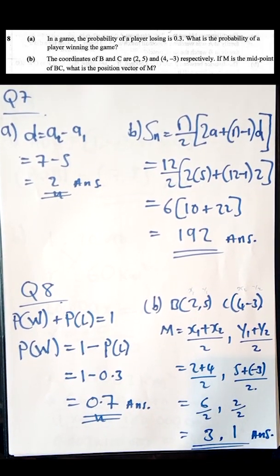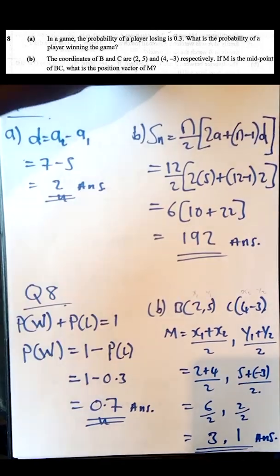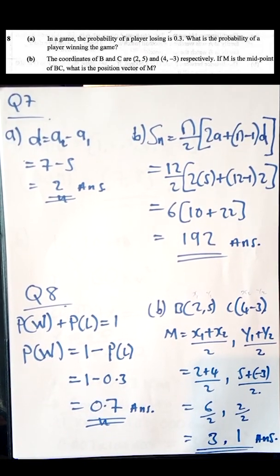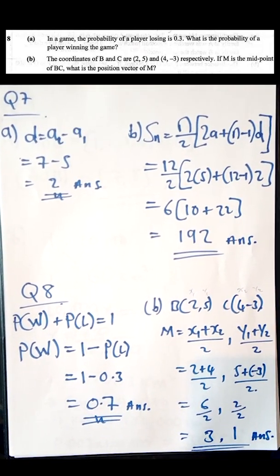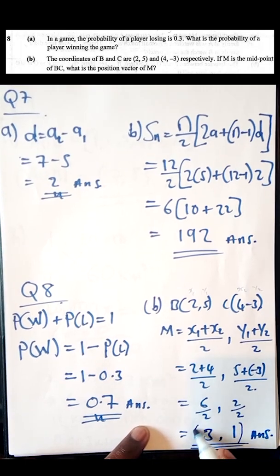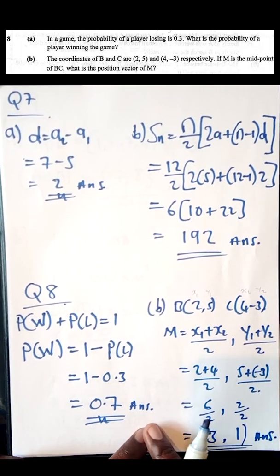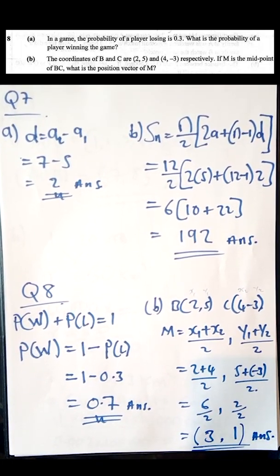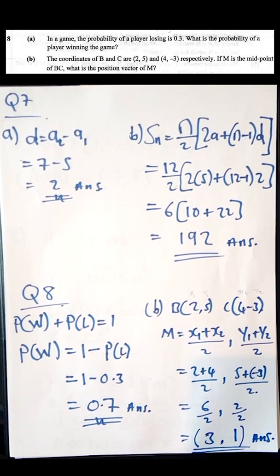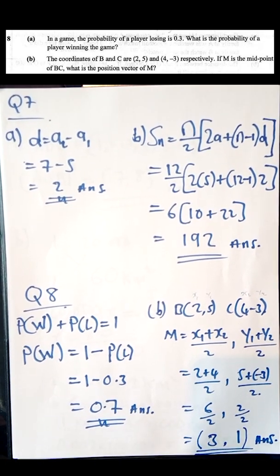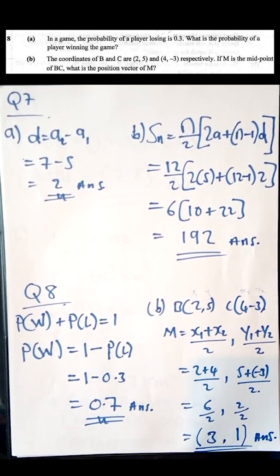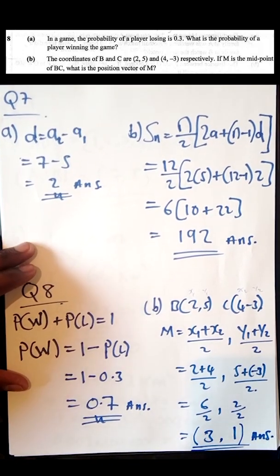This result is expressed as the position vector. You can write it in bracket form. So (3, 1) is the final answer — that is the position vector for the midpoint of the two points joined by the line.